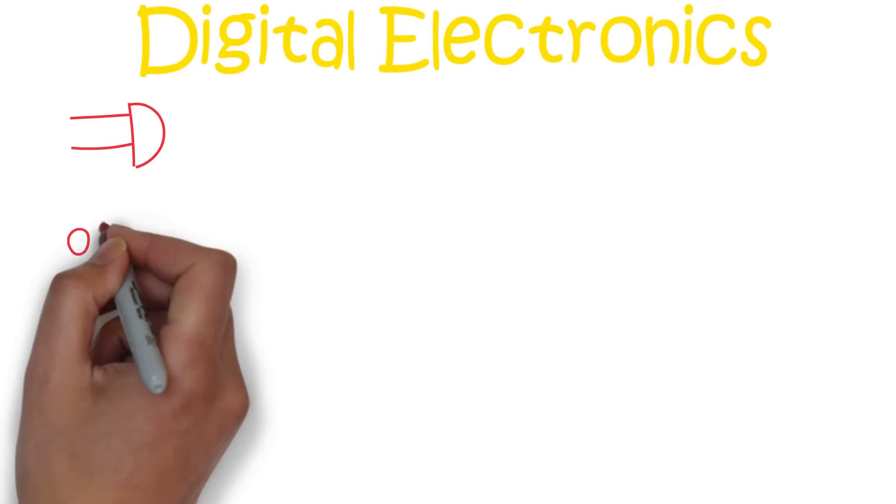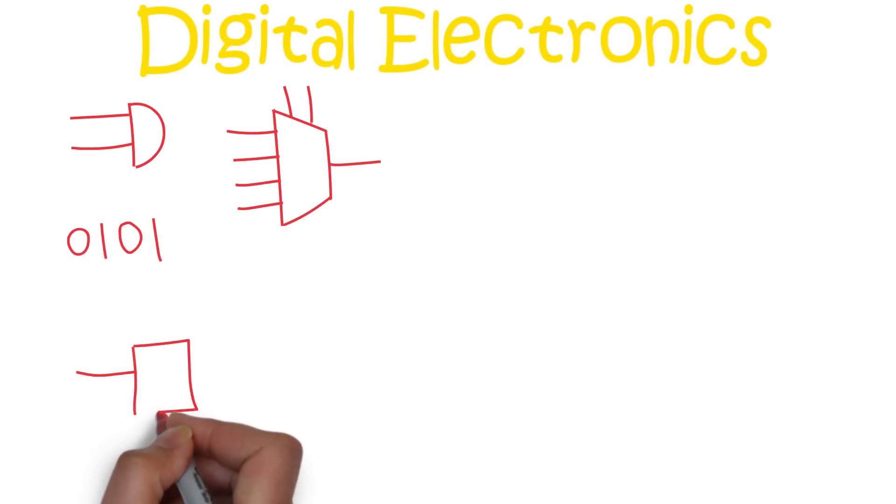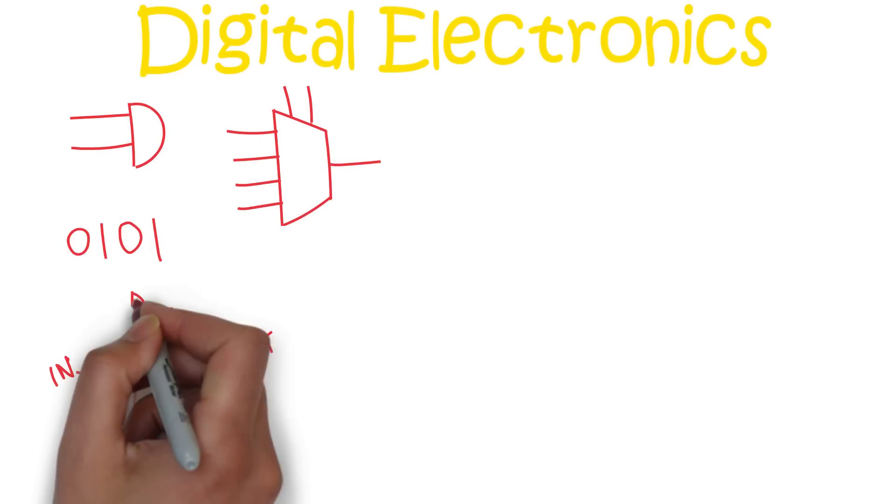Now if we take this path you will start to head in the direction of digital electronics and computer engineering. This section will be digital fundamentals where you will learn about gates, binary, and some of the digital circuits like multiplexers, adders, and flip-flops.